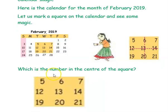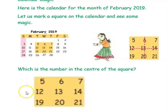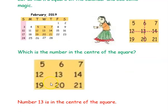The first question is: which is the number in the center of the square? So this is the square — it is a 3×3 arrangement of numbers. The number in the center of the square is 13. Thus 13 is the number in the center of the square.